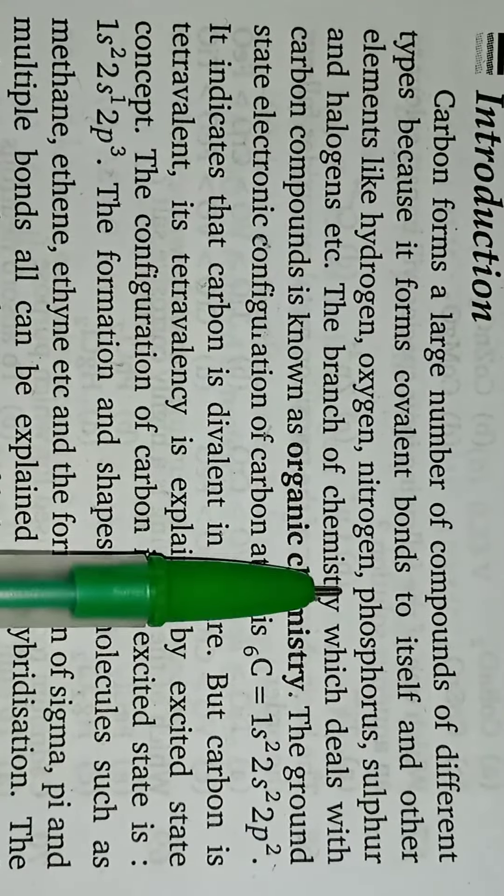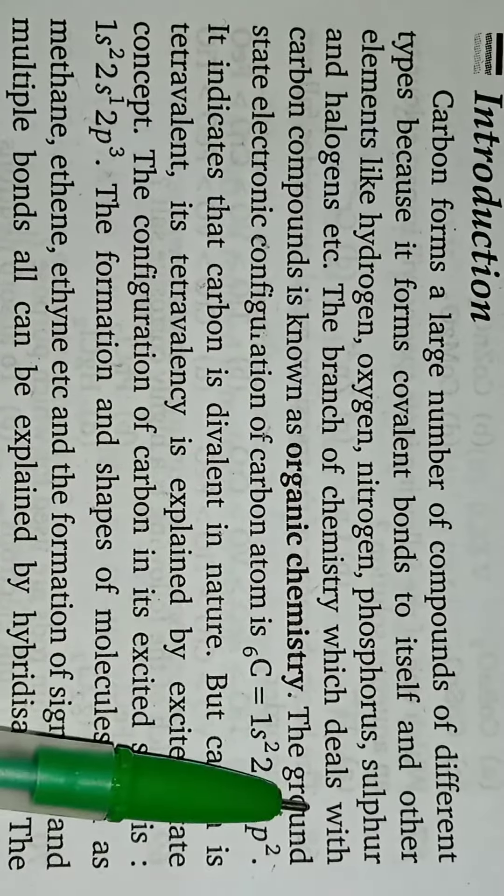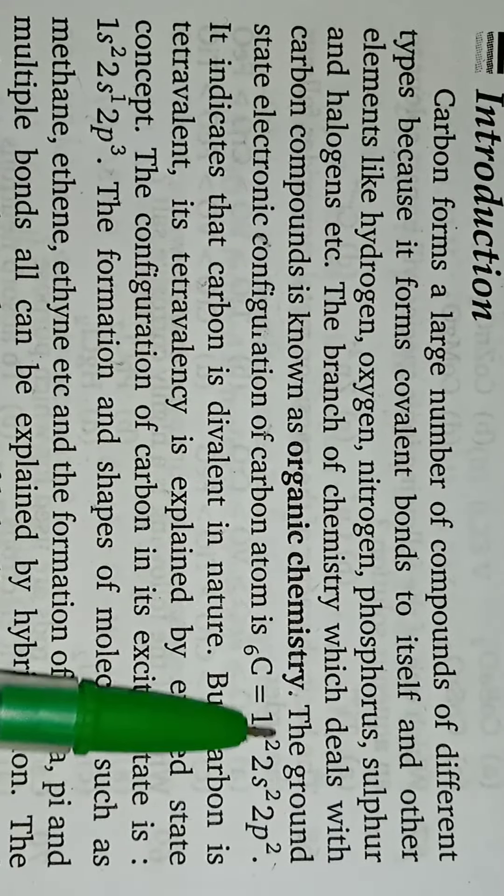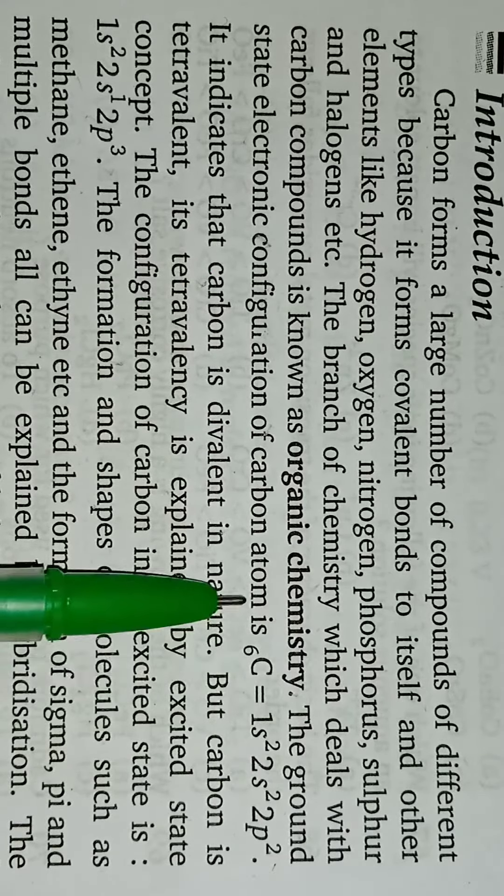and other elements like hydrogen, oxygen, nitrogen, phosphorus, sulfur, and halogens. The branch of chemistry which deals with carbon compounds is known as organic chemistry. The ground state electronic configuration of carbon atom C6 is equal to